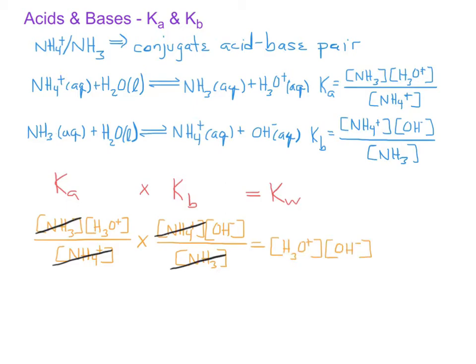If we look at the p values for the Ka and Kb, in other words, pKa and pKb, we find that the pKa plus the pKb is equal to 14.